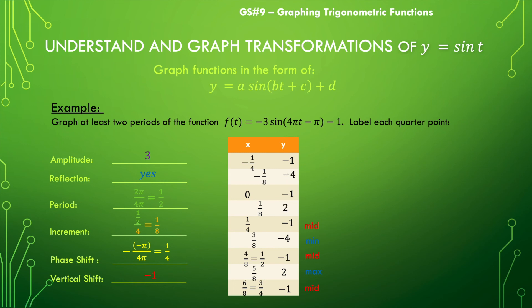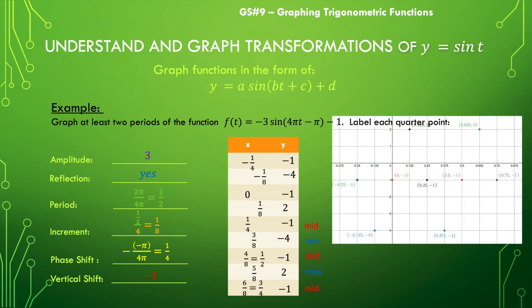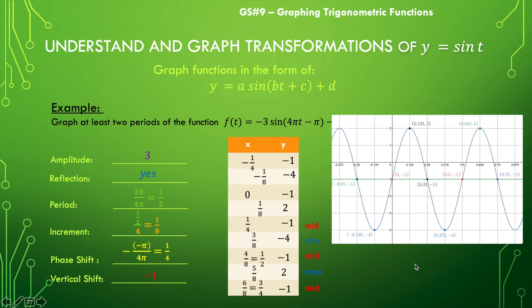Now we are at a place where we can go ahead and graph this. We plot the points first — we have that maximum of positive 2, a minimum of negative 4, and everything centering around the line y equals negative 1. When we sketch the curve we have that nice sine function, and I went ahead and put the line y equals negative 1 in there so you can see how that splits the graph directly in half — that does become our new midline.